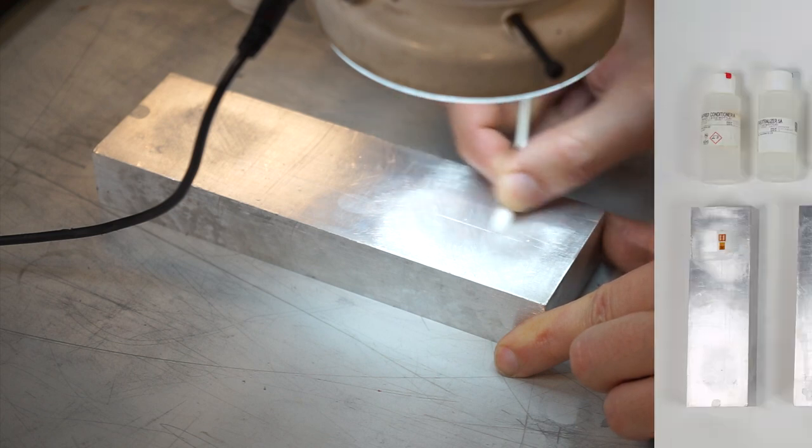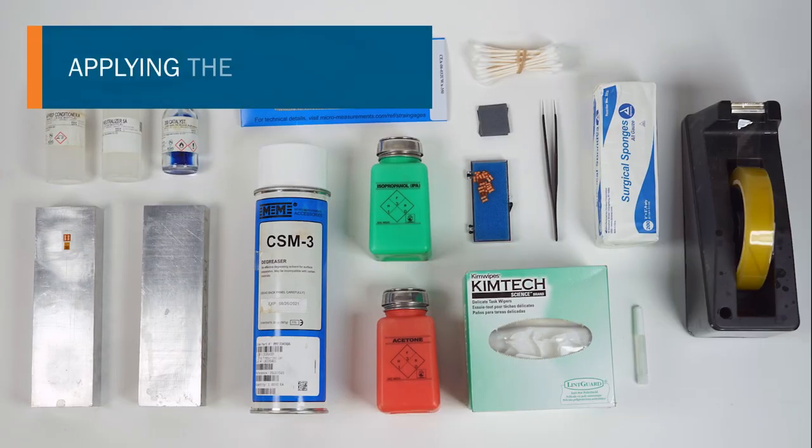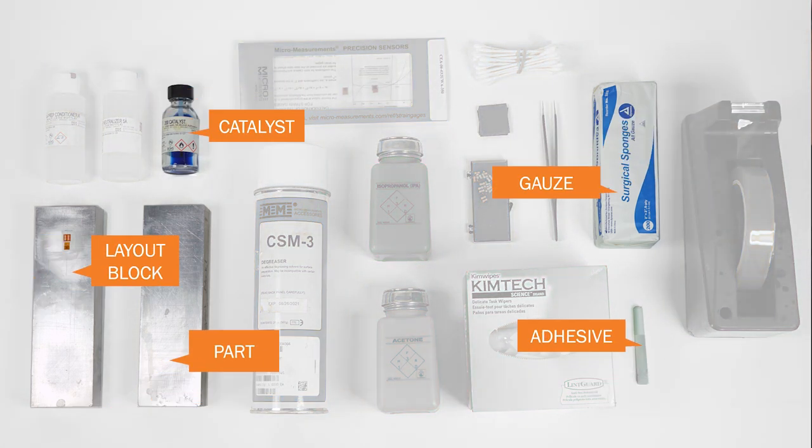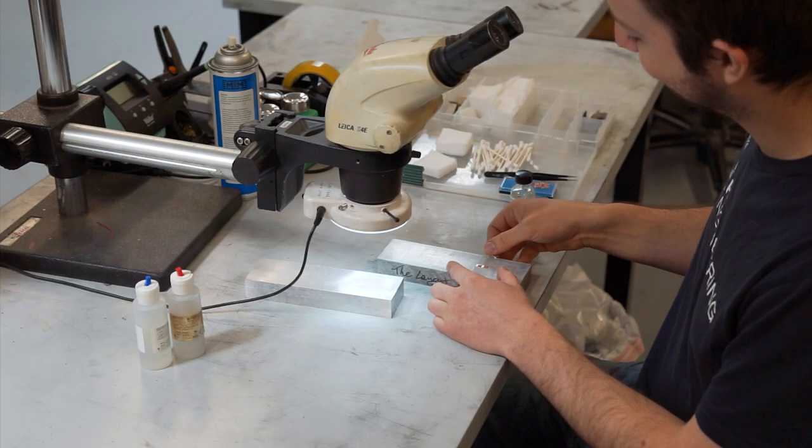For the next segment, make sure to have all materials available before beginning as timing will be crucial. You will need the part in question, the layout block with the gauge, the catalyst and adhesive, gauze, and a working microscope.